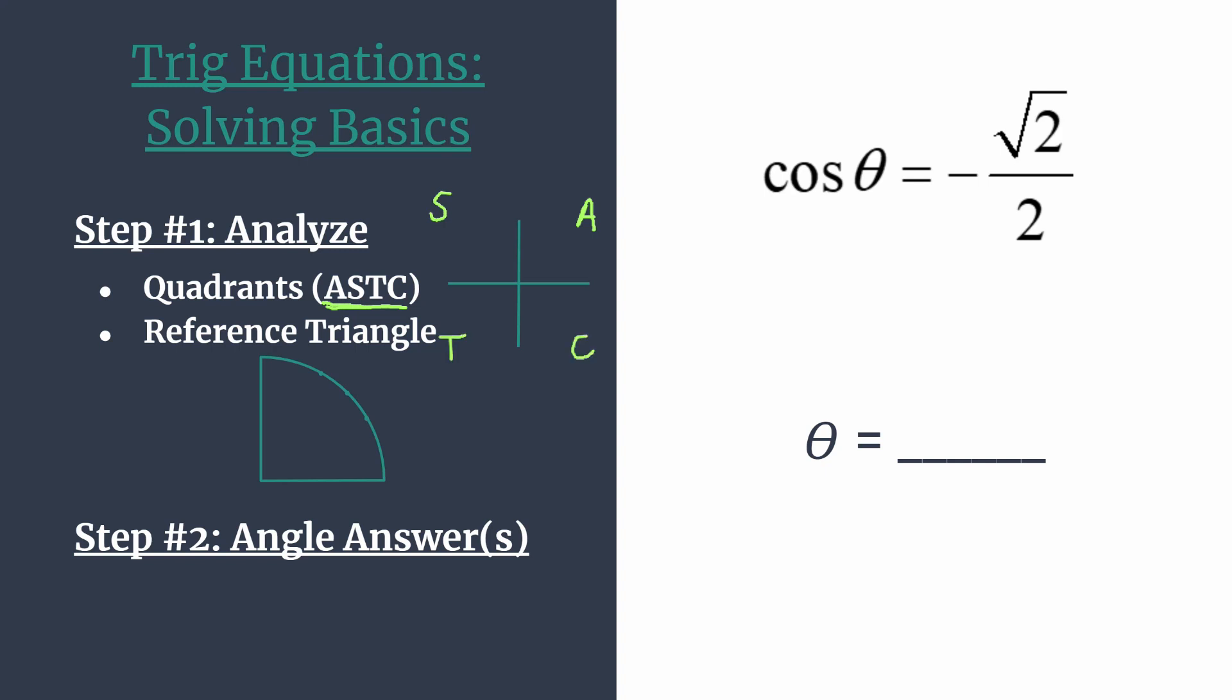And so a quick reminder of how this works. The A stands for all. All trig functions are positive in the first. In quadrant two, the S tells us that sine and its reciprocal cosecant are the only positive ones. In quadrant three, it's tangent and cotangent that are positive. And in quadrant four, that C tells us cosine and its reciprocal secant are positive.